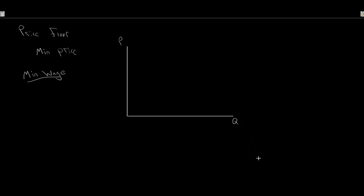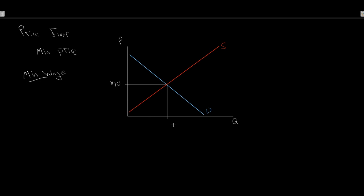In the labor market, demand is firms — how many hours of labor they demand — and supply is you and I supplying our labor to firms. At equilibrium, let's say we're getting paid $10 per hour, with some quantity of hours being exchanged. Consumer surplus is the initial triangle for firms, and producer surplus is the initial triangle for workers — it's a little backwards from how we think of most goods and services.